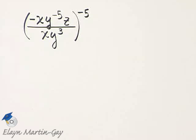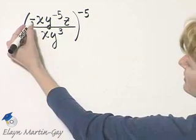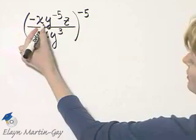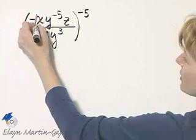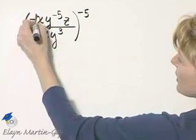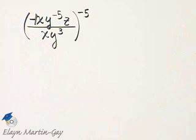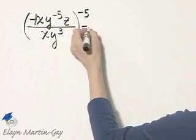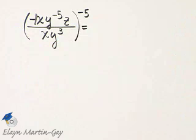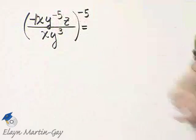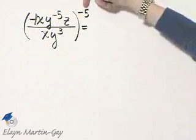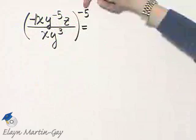Let's simplify this expression and write it with positive exponents only. Notice I have a negative x in the numerator. I'm going to write it as negative 1 times x, and we'll treat the negative 1 separately from the x. First, I'll use the power of a product in a quotient rule, where every single factor in the numerator and denominator is raised to this power.